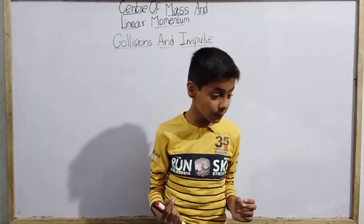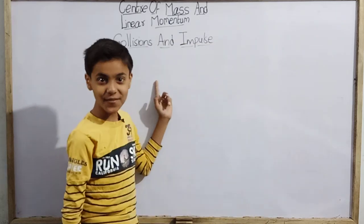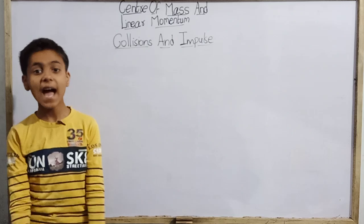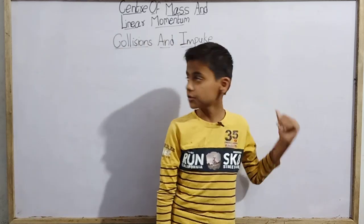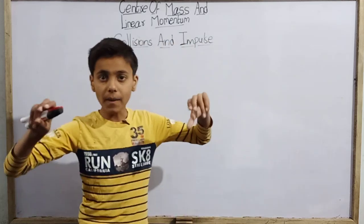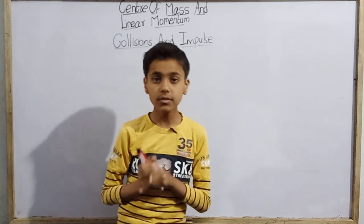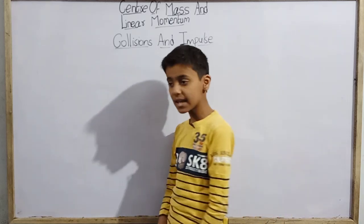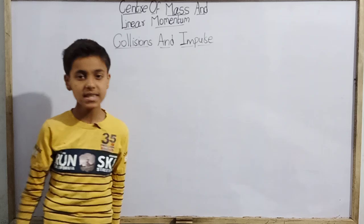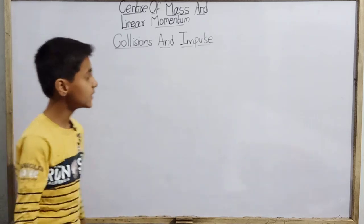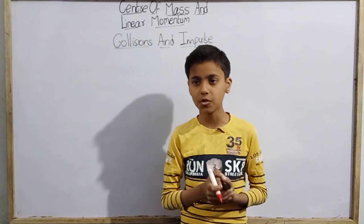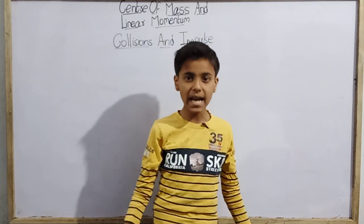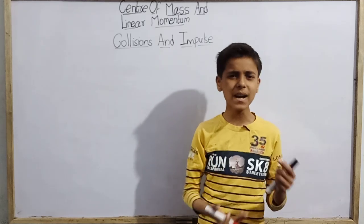Hello everyone and welcome back to SK Monarchids. We are back with center of mass and linear momentum. We have covered much already, and we still have much to cover, so we are going to do collisions and impulse — when two particles, one projectile and one target, collide. Around the entire world and in nature, we see that particles always collide.